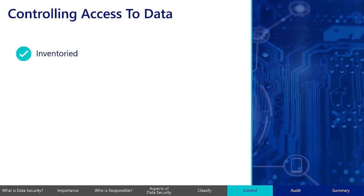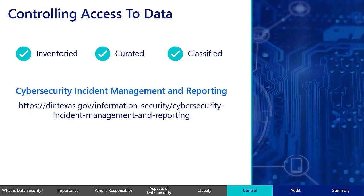Organizations that have inventoried, curated, and classified their data assets are more effective in meeting the reporting requirements outlined in TAC 202, such as assessing the significance of the breach and any potential losses. For more information, guidance on incident reporting can be found on the Department of Information Resources website. Consult with your agency's information security office or other appropriate office if you have any questions about these reporting requirements or the process for reporting security incidents in your organization.